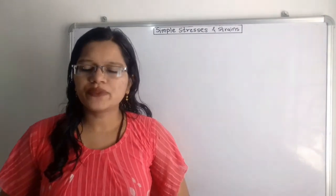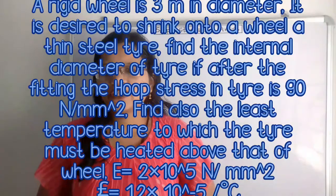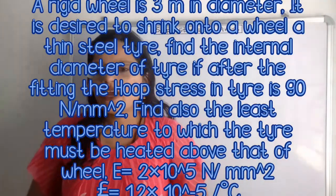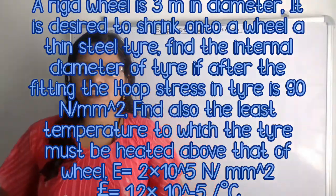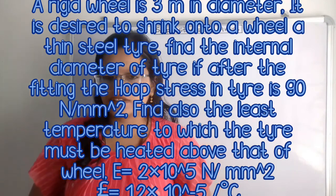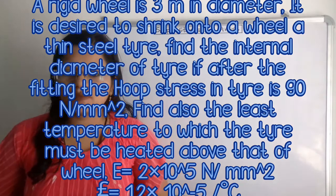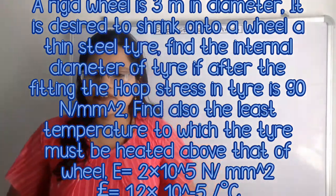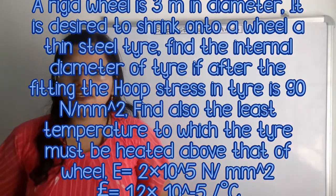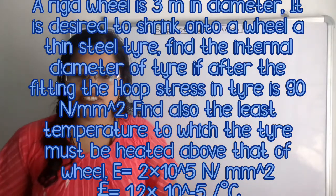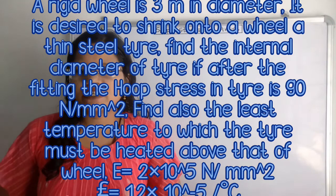Now I will read the problem. A rigid wheel 3 meters in diameter — it is desired to shrink onto it a thin steel tire. Find the internal diameter of the tire if, after fitting, the hoop stress in the tire is 90 Newton per millimeter square. Find also the least temperature to which the tire must be heated above that of the wheel. E (Young's modulus) equals 2 × 10⁵ N/mm² and alpha (coefficient of linear expansion) equals 1.2 × 10⁻⁵ per degree Celsius.